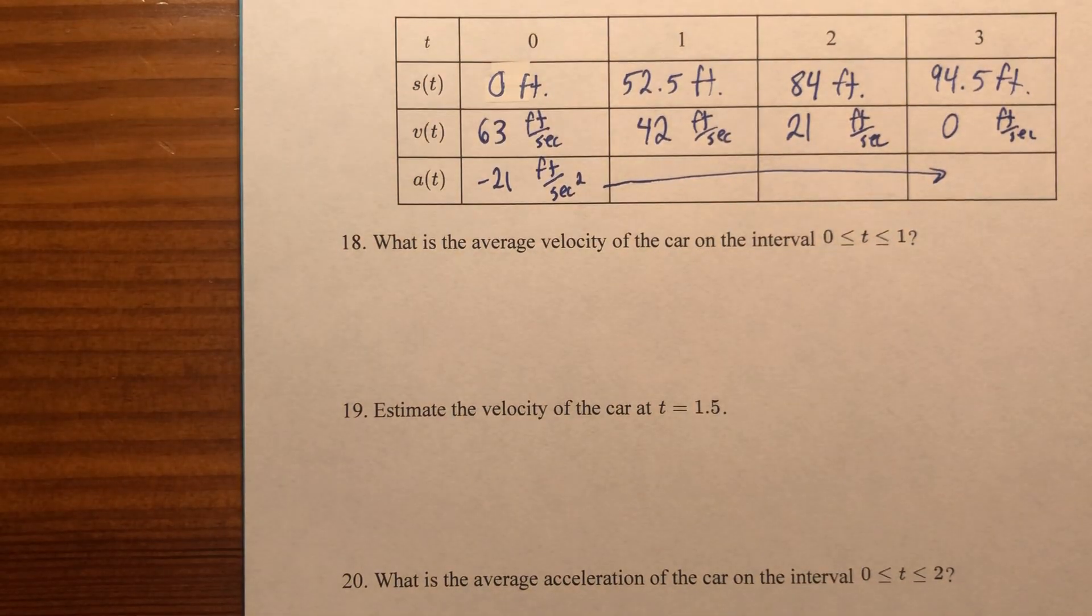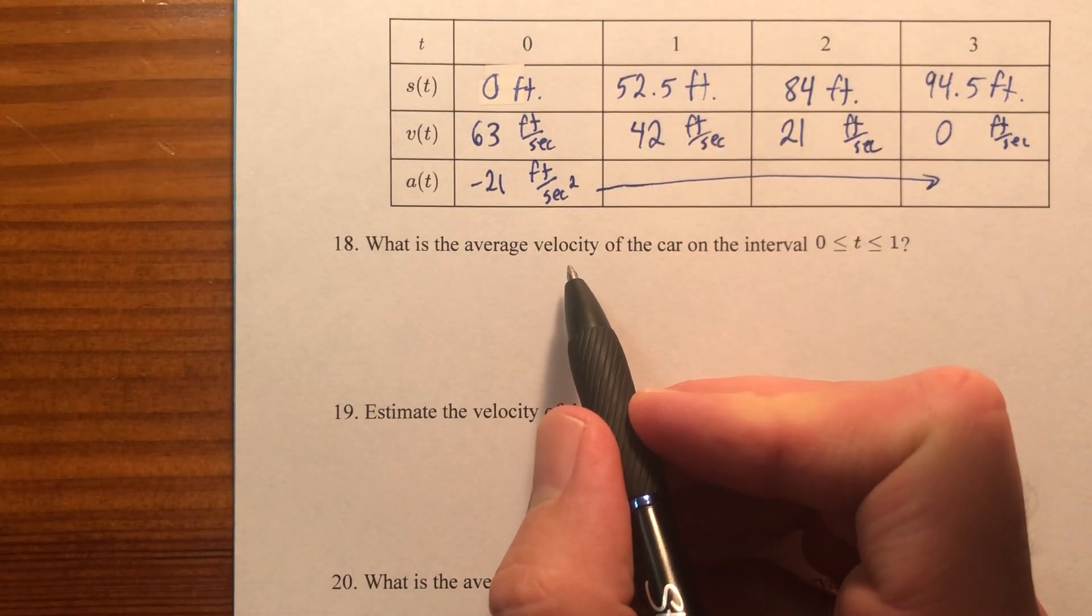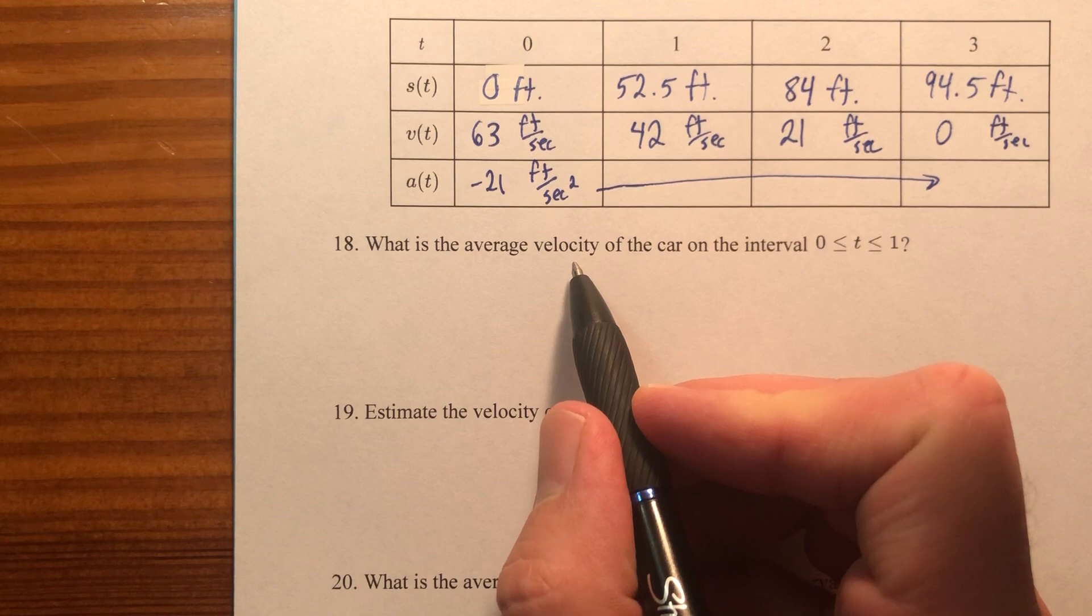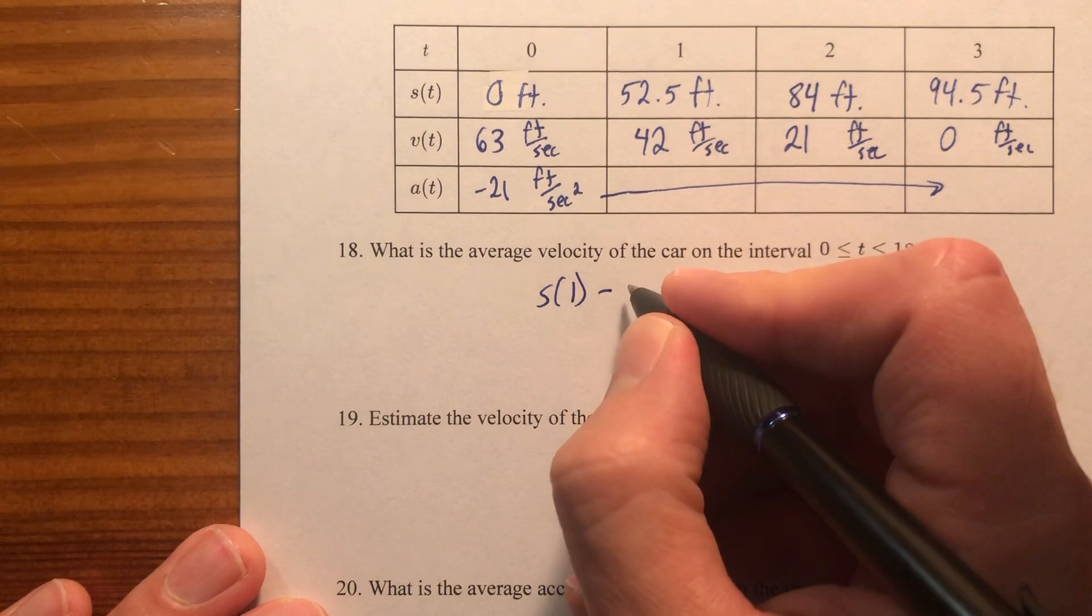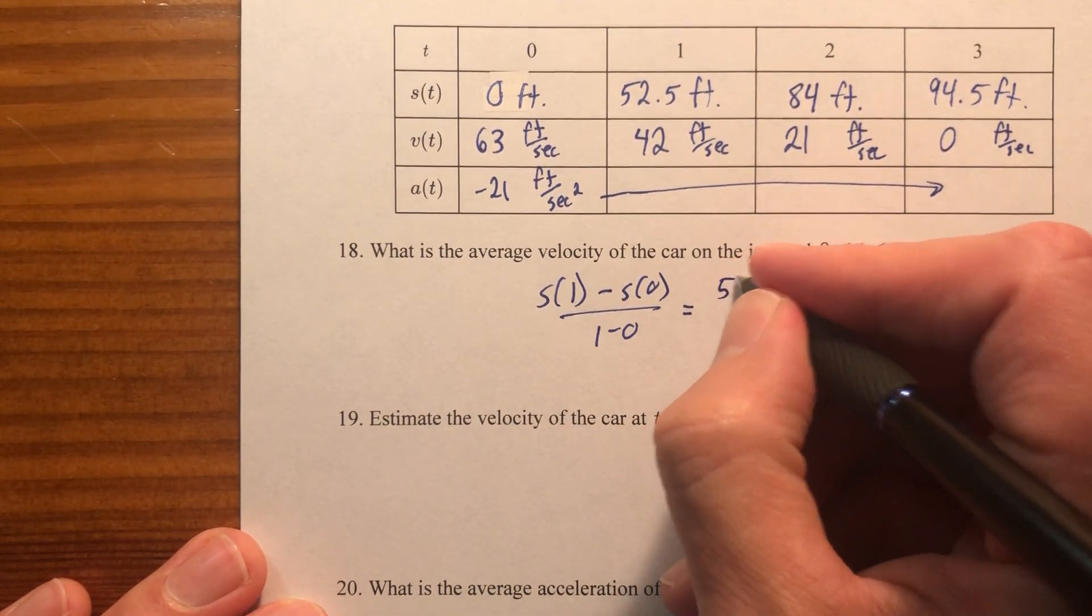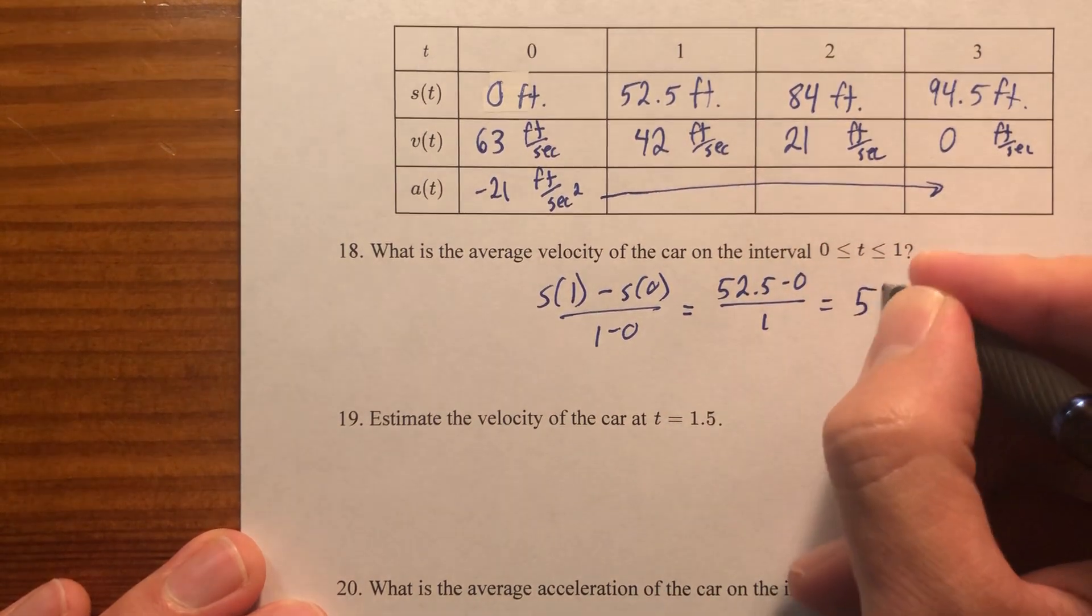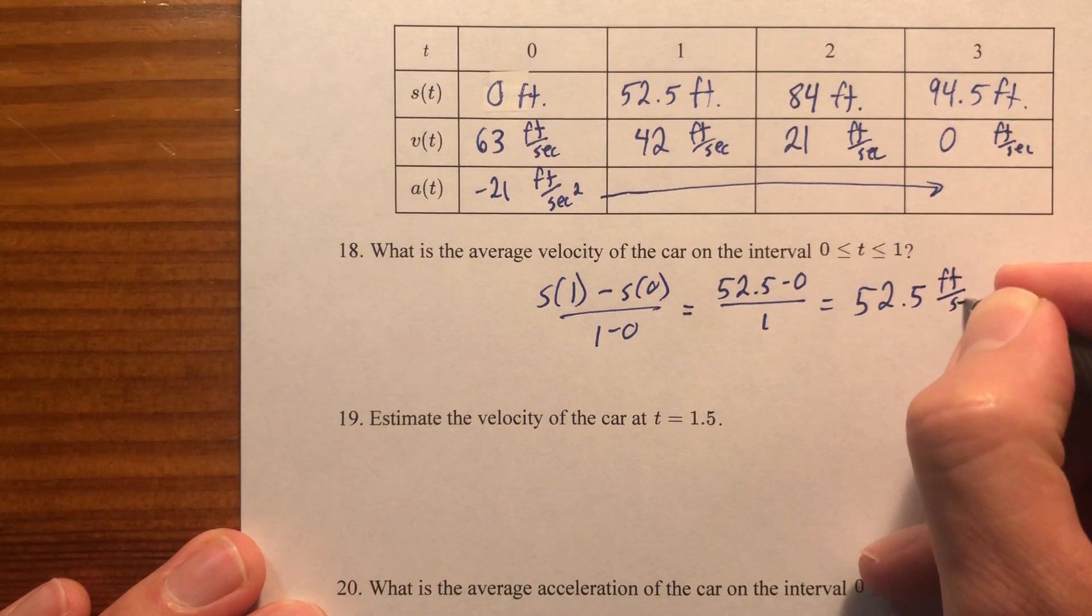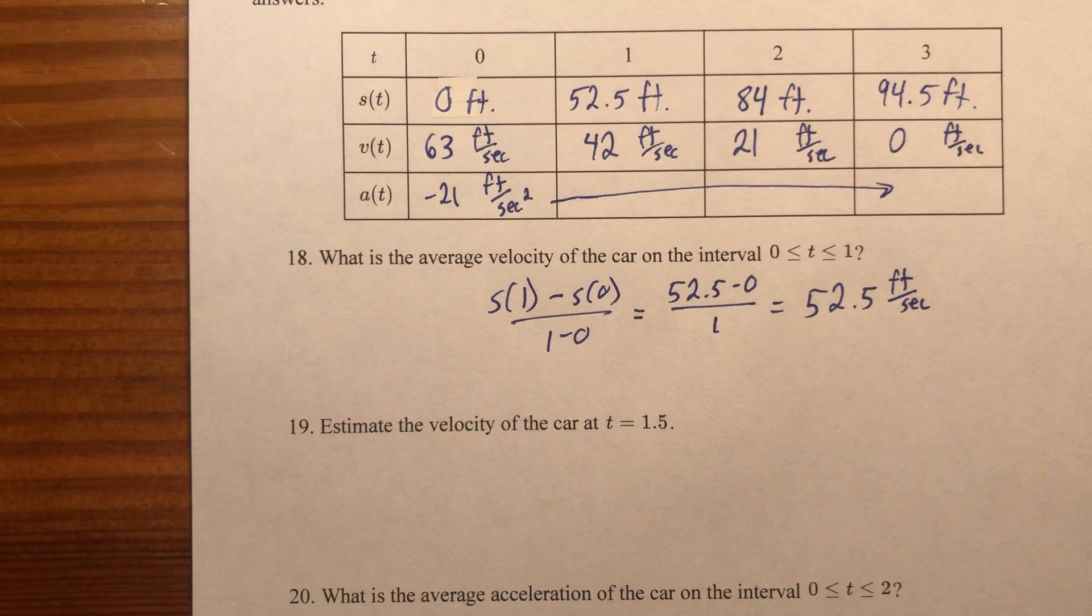What is the average velocity of the car? The average velocity of the car is, again, not finding the slope between velocities, but finding the slope between the positions. So we are going to reinforce some old ideas here. S of 1 minus S of 0 over 1 minus 0. That's going to give me 52.5 minus 0 over 1. So 52.5 feet per second is the average velocity in the first second after the driver hits the brakes.